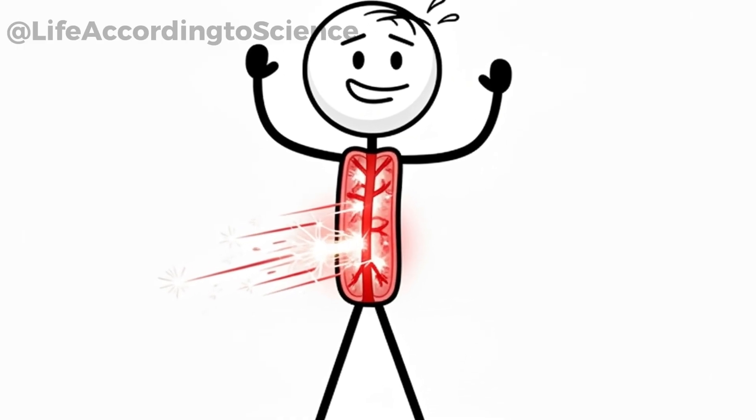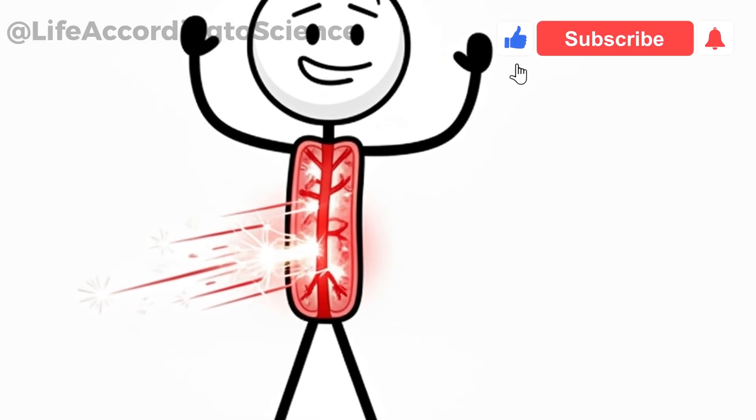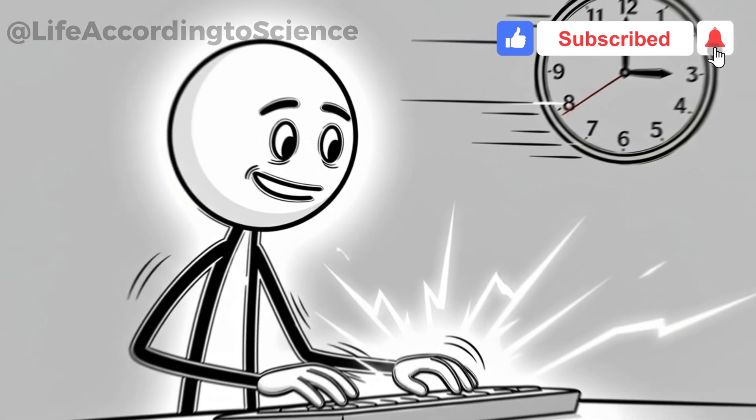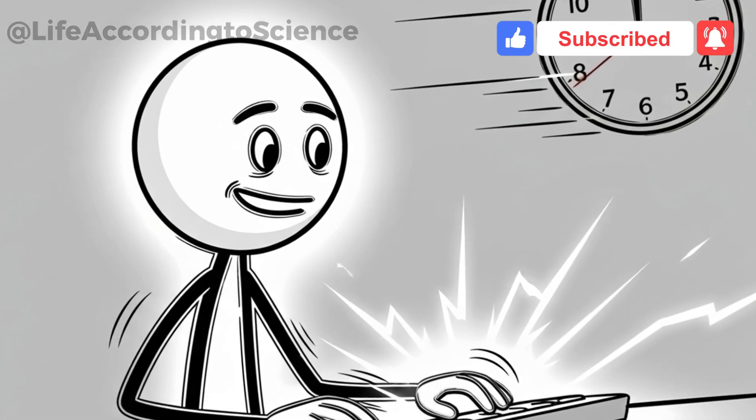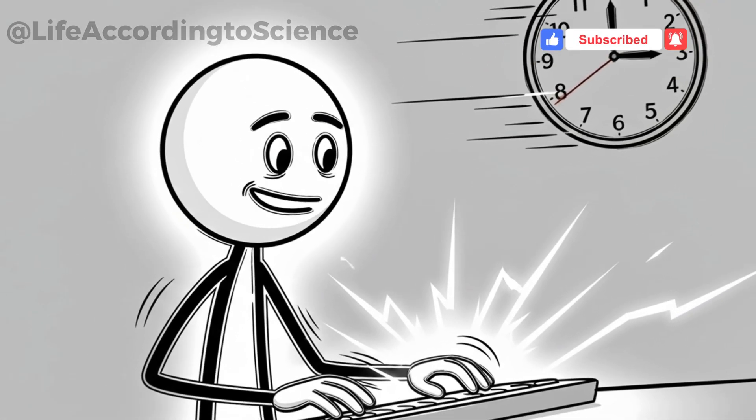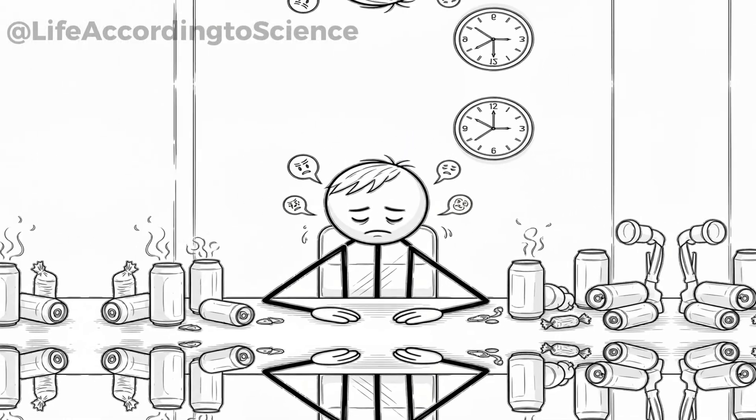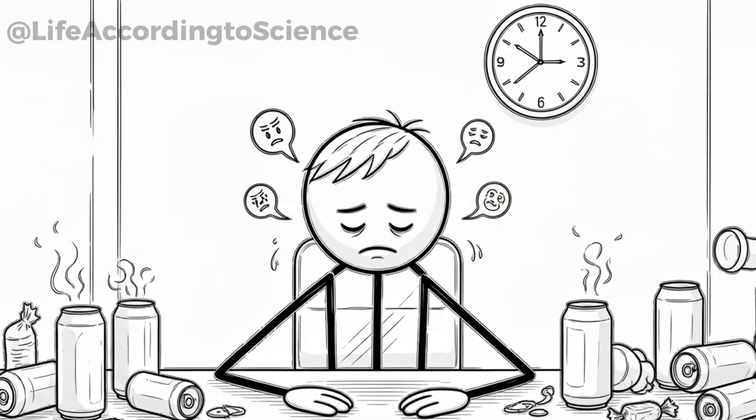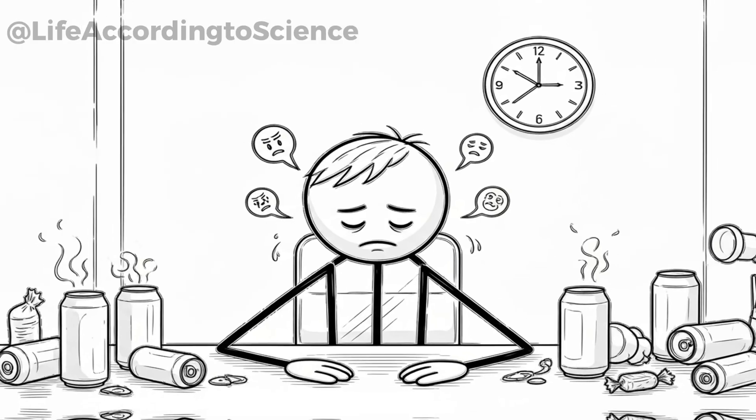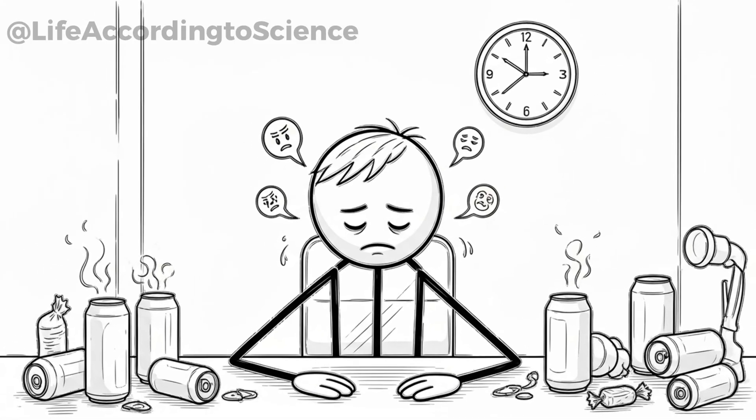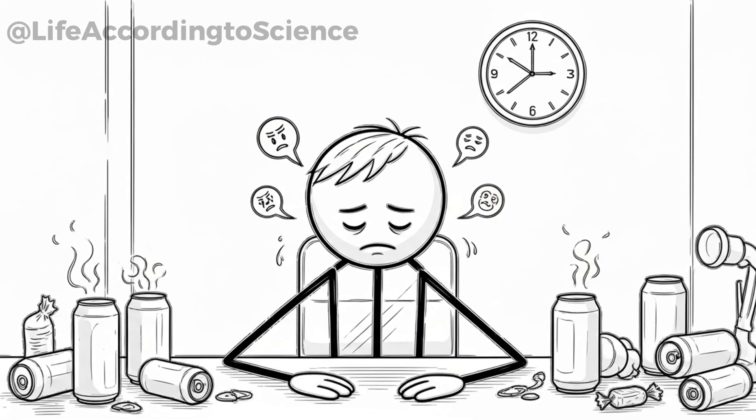In the short term, sugar can spike your blood glucose and insulin levels, making you feel temporarily energized. But within an hour or two, the crash sets in. That's when you feel sluggish, irritable, and ironically, craving another can. This rollercoaster effect can repeat itself daily when energy drinks become a habit.